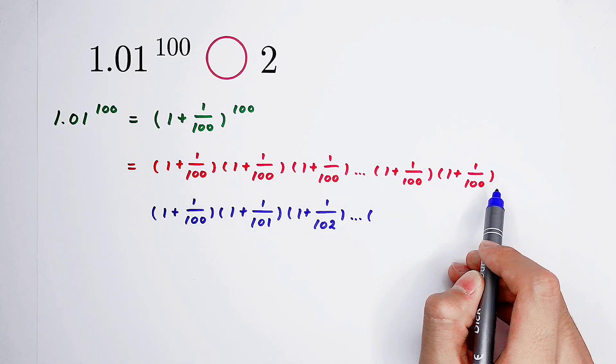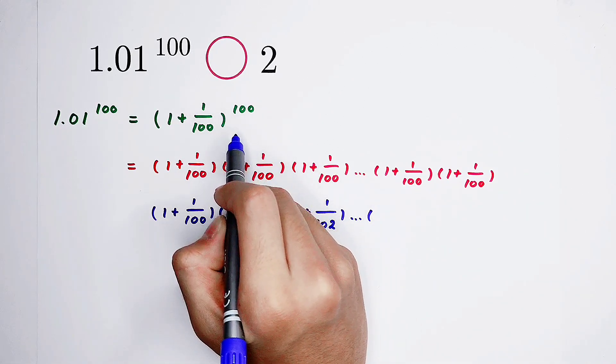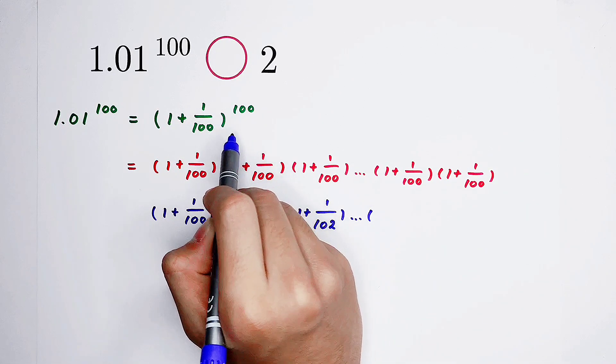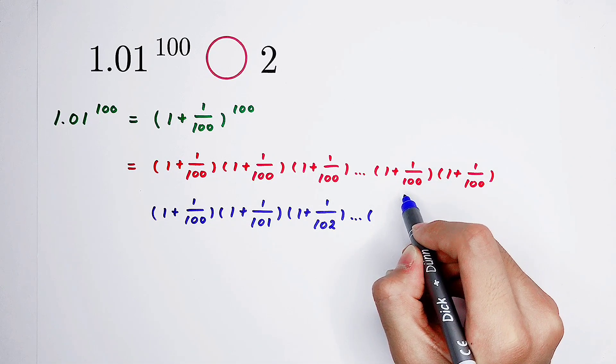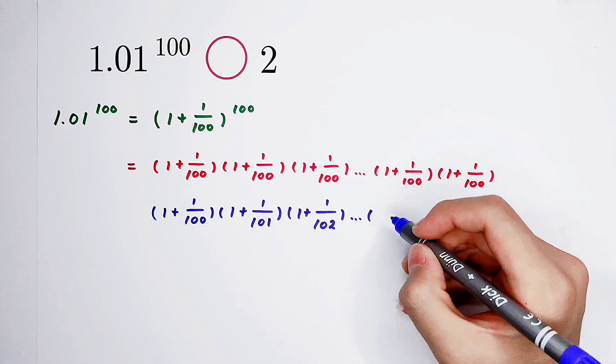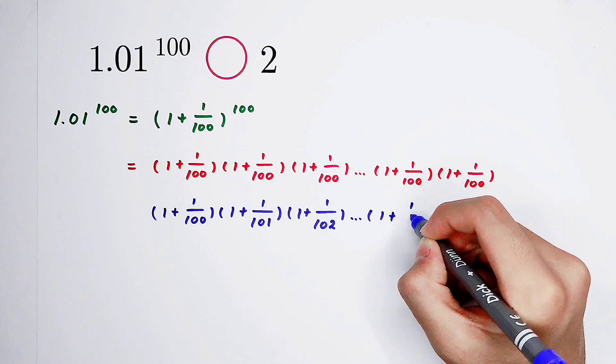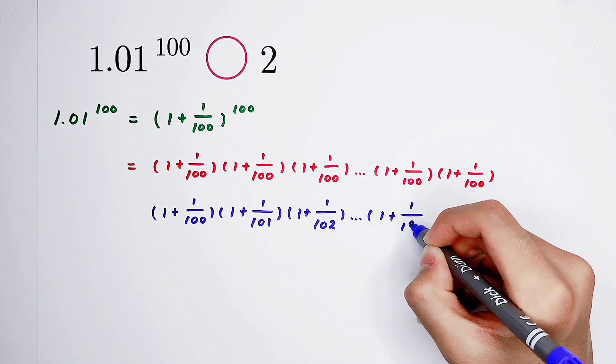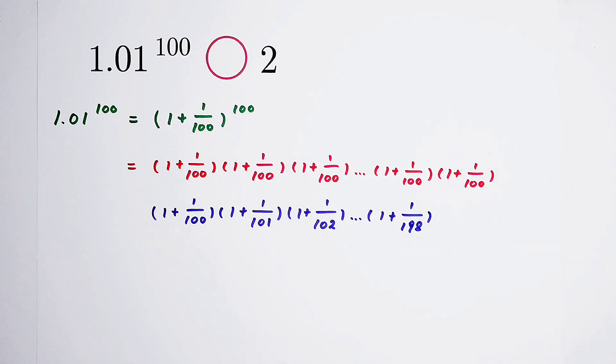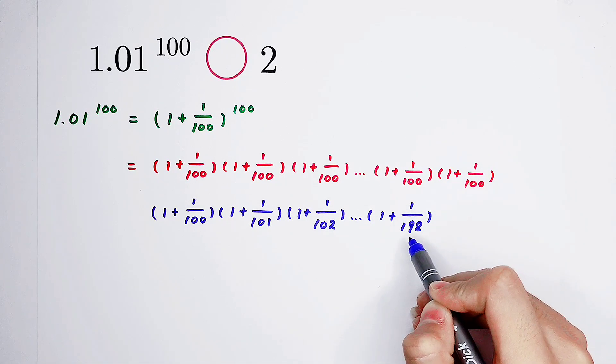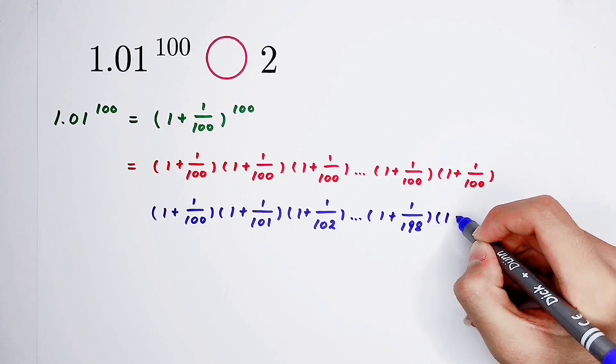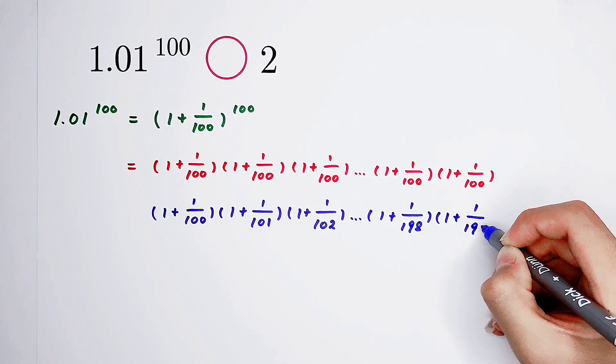Now, I have a question. How many factors are here? Of course, quite easy. 100. Because our exponent was 100. So 100 factors. So here, it is the 99th factor. And the 99th factor will have the denominator 1 over 198. Why? Because we turn the first denominator into 100. The second into 101. The third into 102. Until the 99th into 198. So the last one is 1 plus 1 over 199.